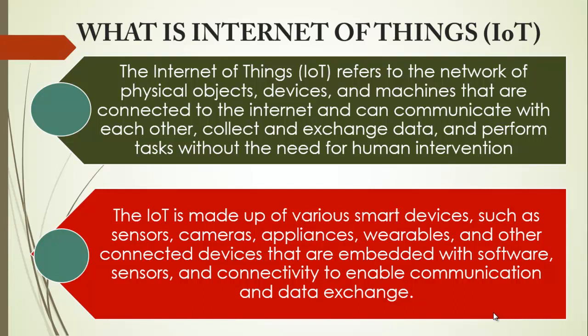These devices are embedded with software, sensors, and connectivity to enable communication and data exchange. They can collect data from their environment or users, process that data, and use it to perform actions or trigger events. For example, a smart thermostat can learn a user's preferences and adjust the temperature accordingly, or a smart refrigerator can keep track of food items inside and automatically order more when supplies are low.